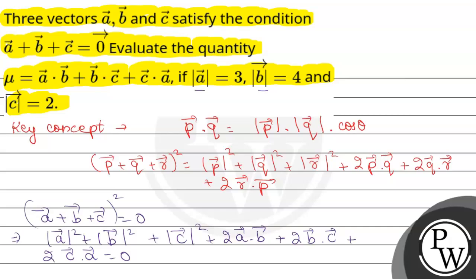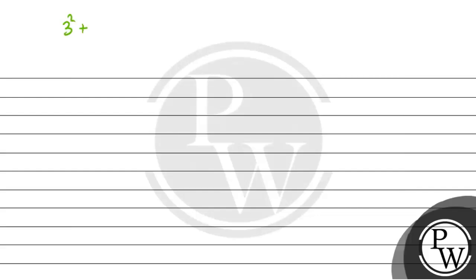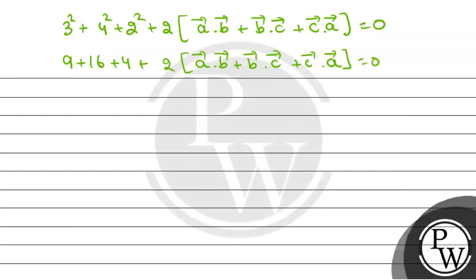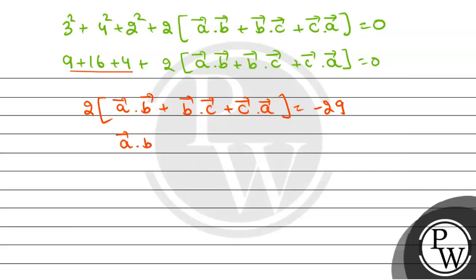These values are given to us. So this becomes 3 squared plus 4 squared plus 2 squared, and factoring out 2 we get: 2 times (vector a dot vector b plus vector b dot vector c plus vector c dot vector a) equals zero. This gives 9 plus 16 plus 4 plus 2 times (vector a dot vector b plus vector b dot vector c plus vector c dot vector a) equals zero, so 29 plus 2 times the expression equals zero, meaning 2 times the dot product sum equals minus 29. Therefore, vector a dot vector b plus vector b dot vector c plus vector c dot vector a equals minus 29 divided by 2.